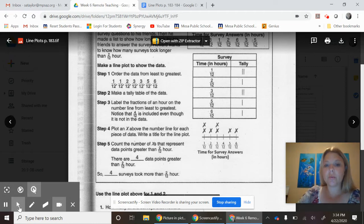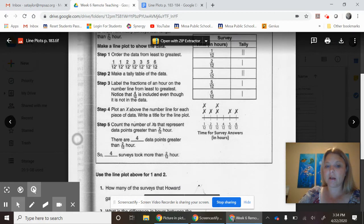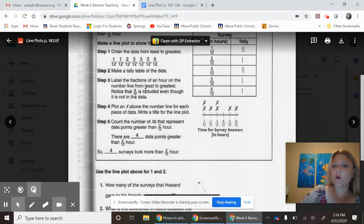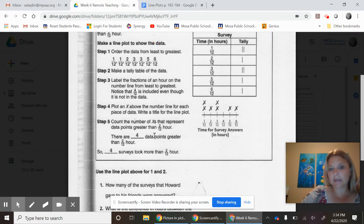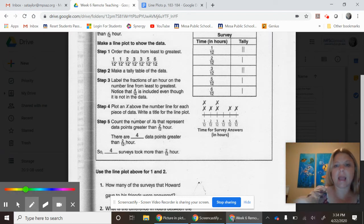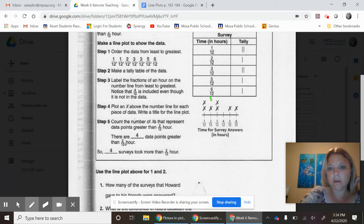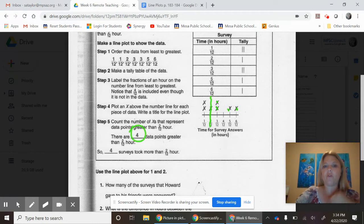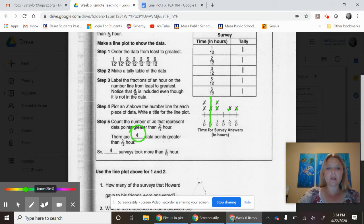Then as you work through it, you're trying to figure out some questions. They want to know how many data points are greater than two twelfths. Once again, if you look at it, here is two twelfths. They want to know how many are greater: one, two, three, four. And that's how they came up with four data points.